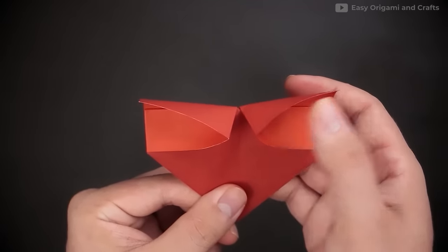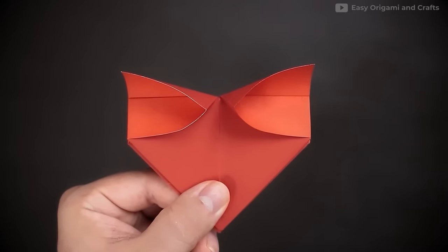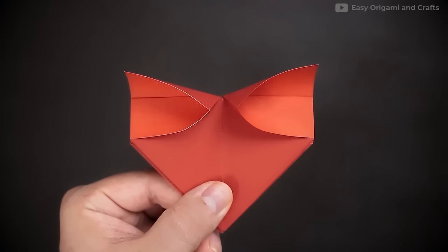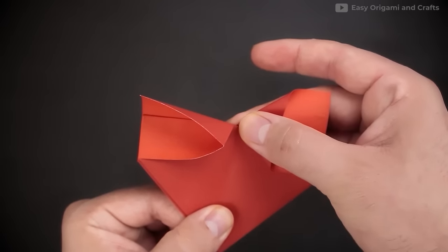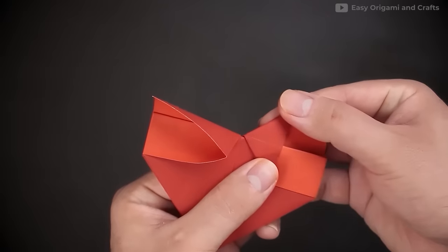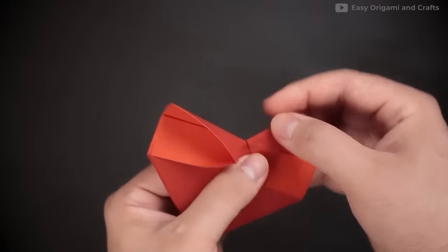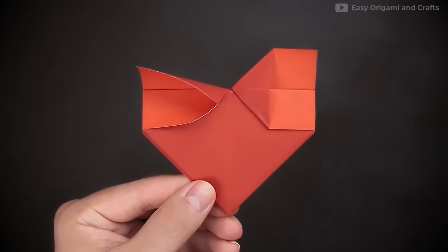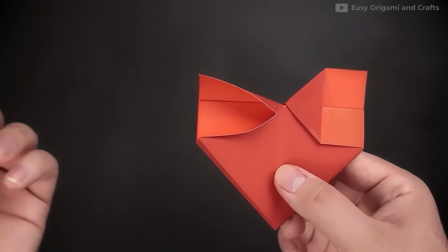These extra layers need to be flattened to the side. More or less like in this image here. So just bring it to the right. And crease sharply. Let's repeat the same with the other.